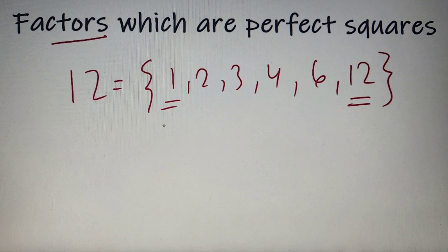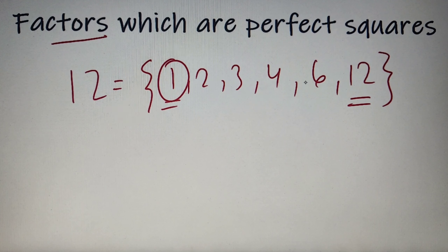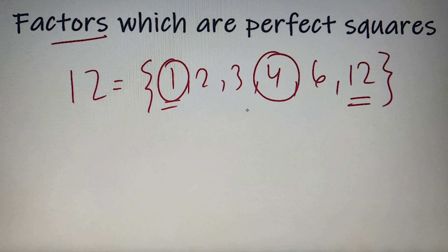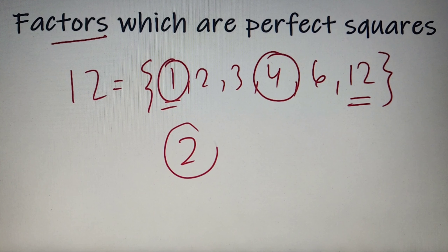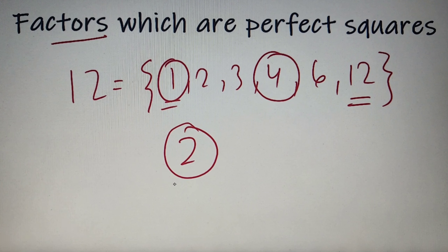Now since we are more interested in calculating how many factors are perfect squares, I can see that 1 is a perfect square and 4 is a perfect square. So the number of factors which are perfect squares for the case of 12 is equal to 2. This was a pretty simple case — but what if I tell you to find the number of perfect square factors for 1000?